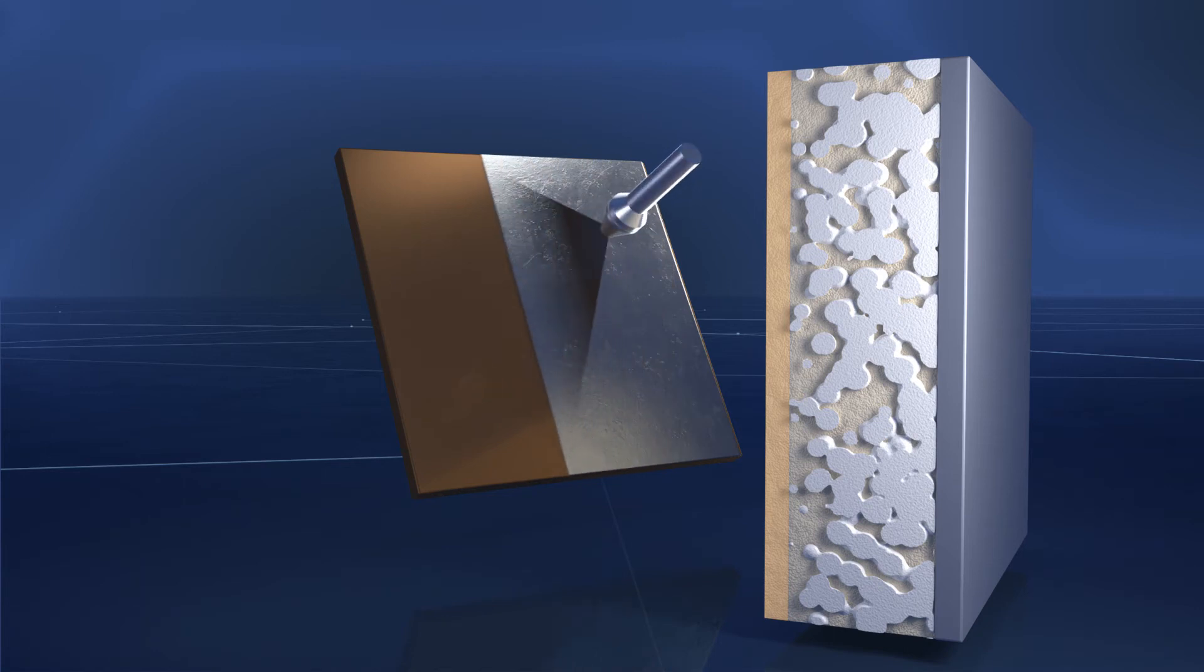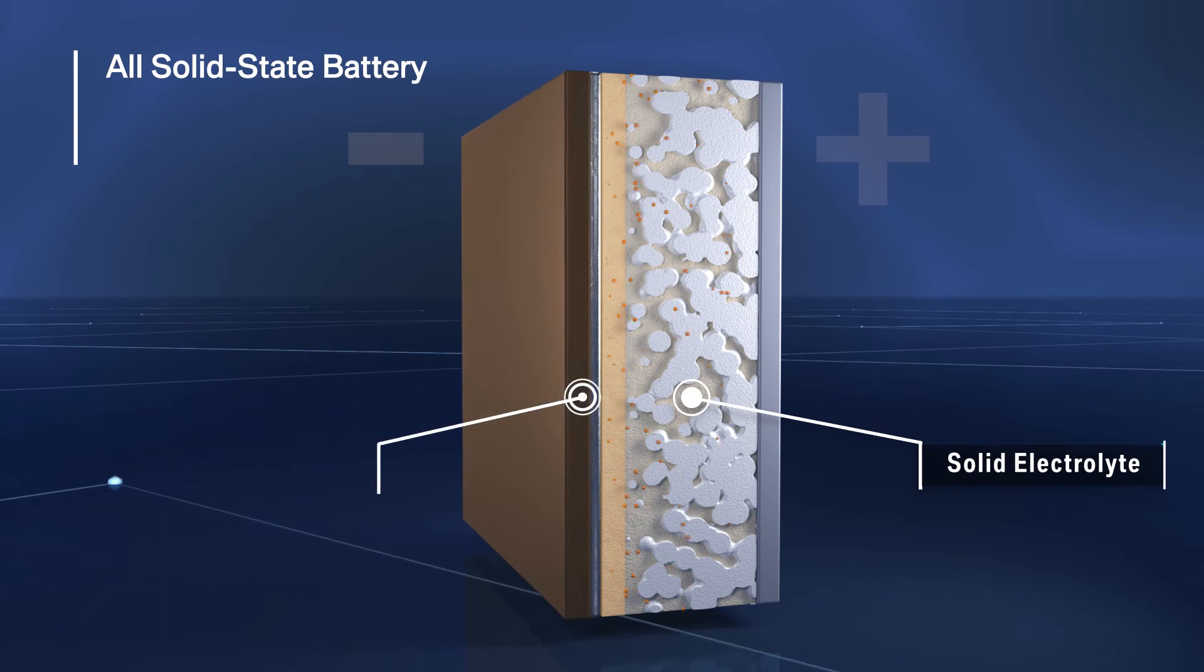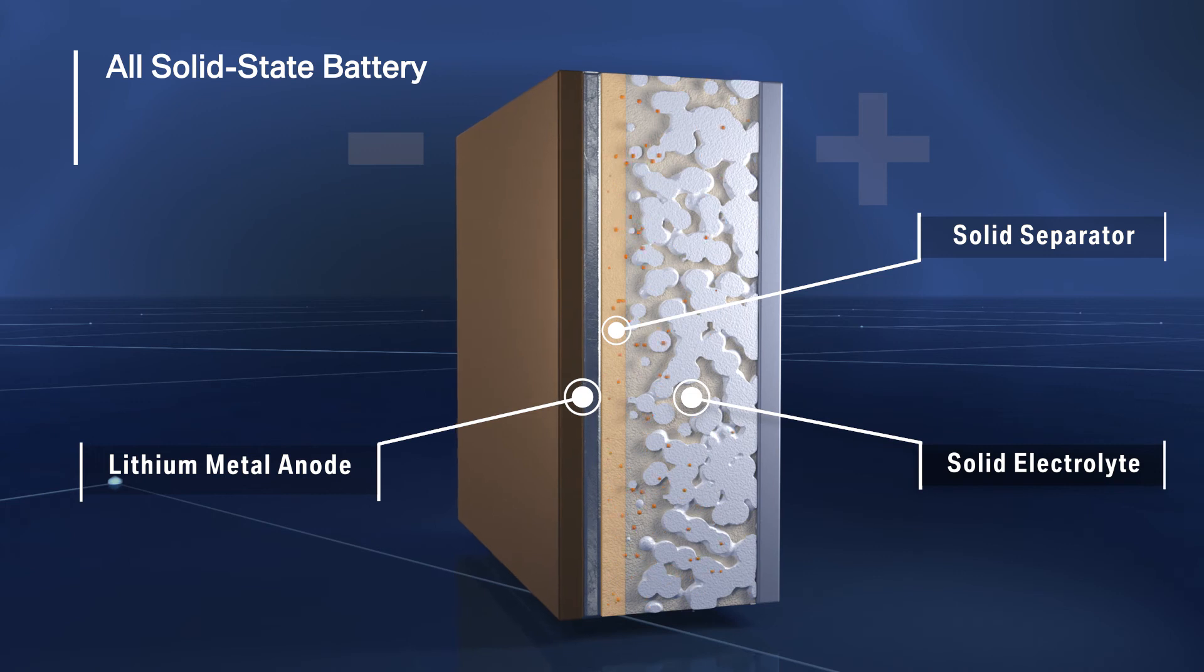A thin layer of lithium metal is employed as anode. During charging, metallic lithium is deposited on the anode and dissolved again during discharging.